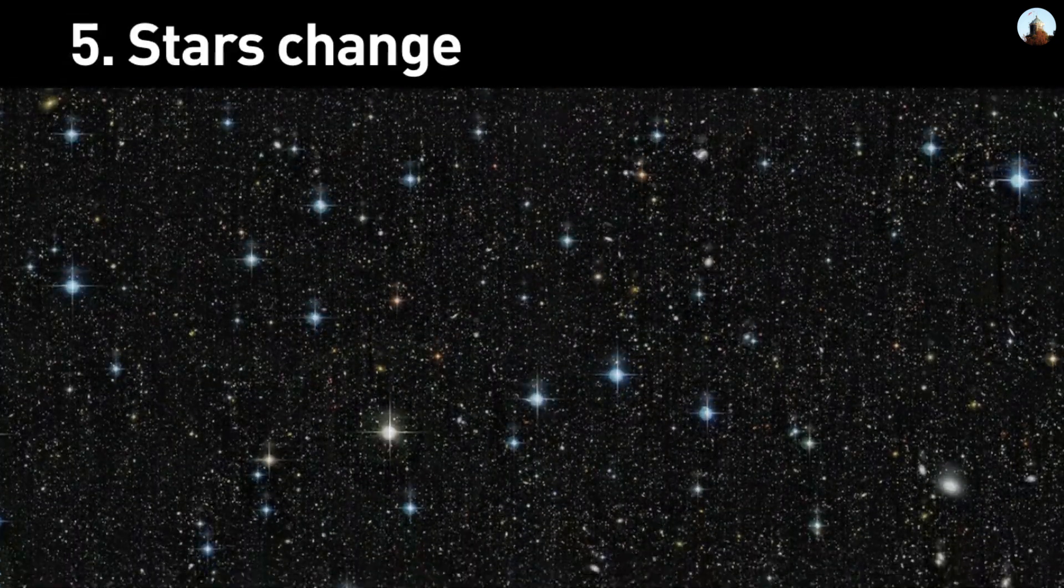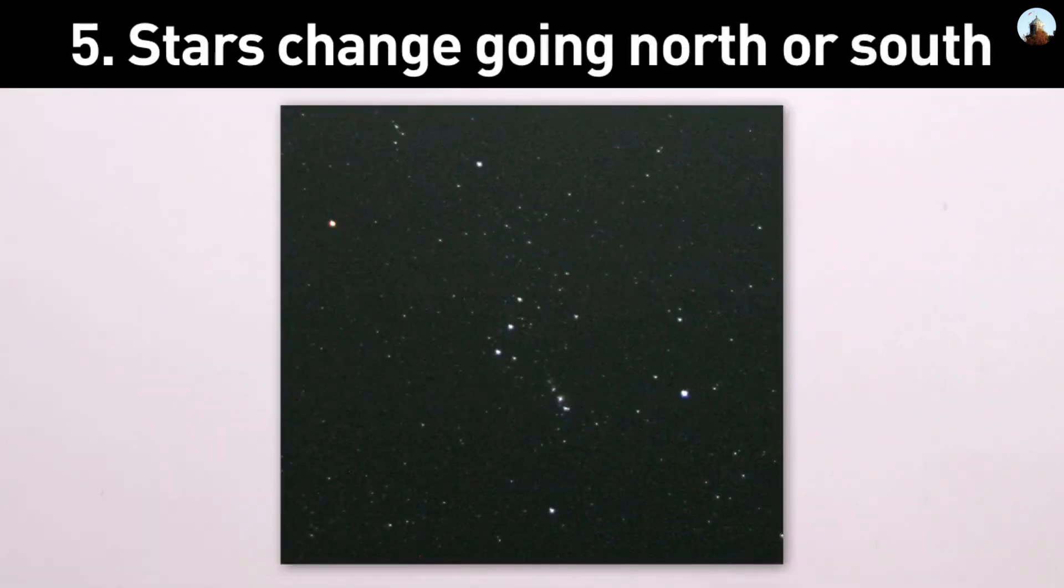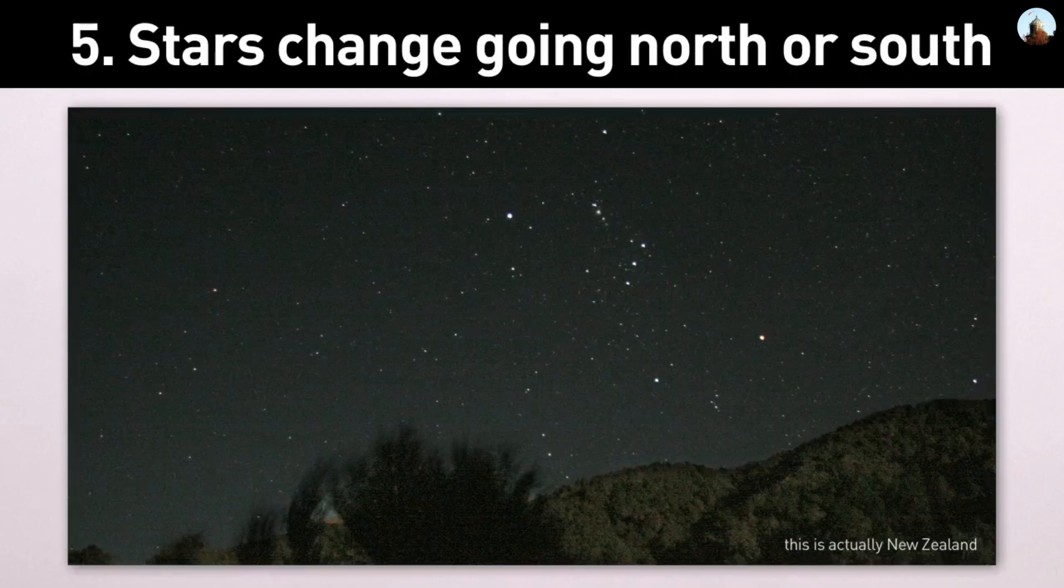Number 5. The stars at night change as you go north or south. For example, Orion is upside down if you're in Australia.